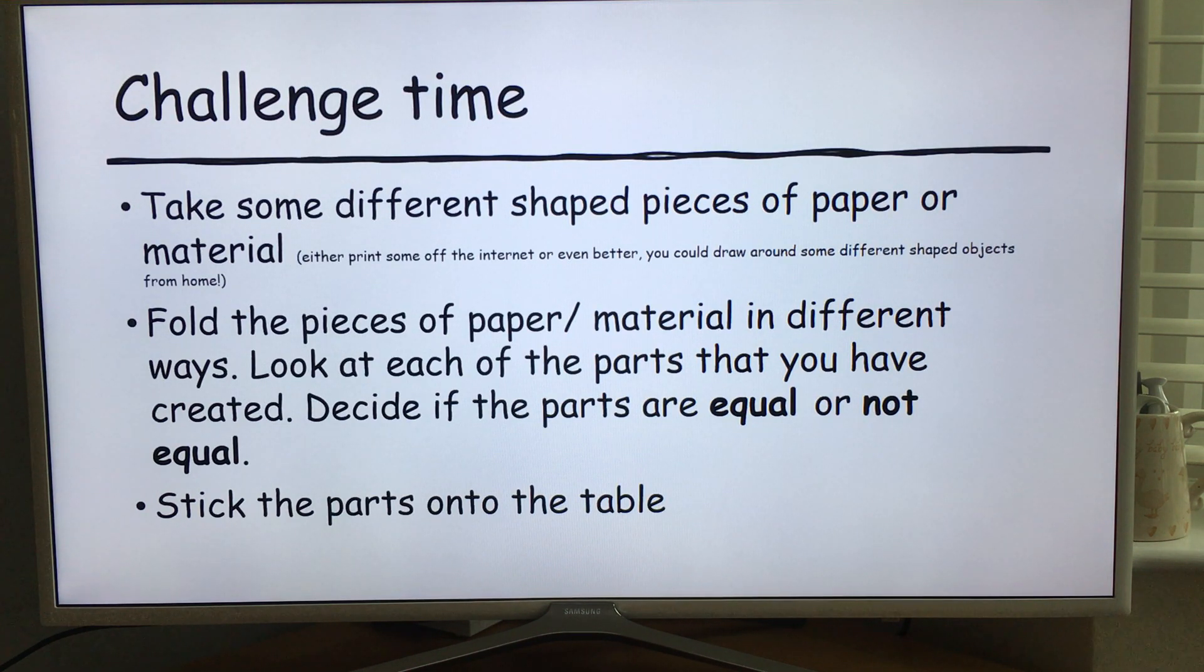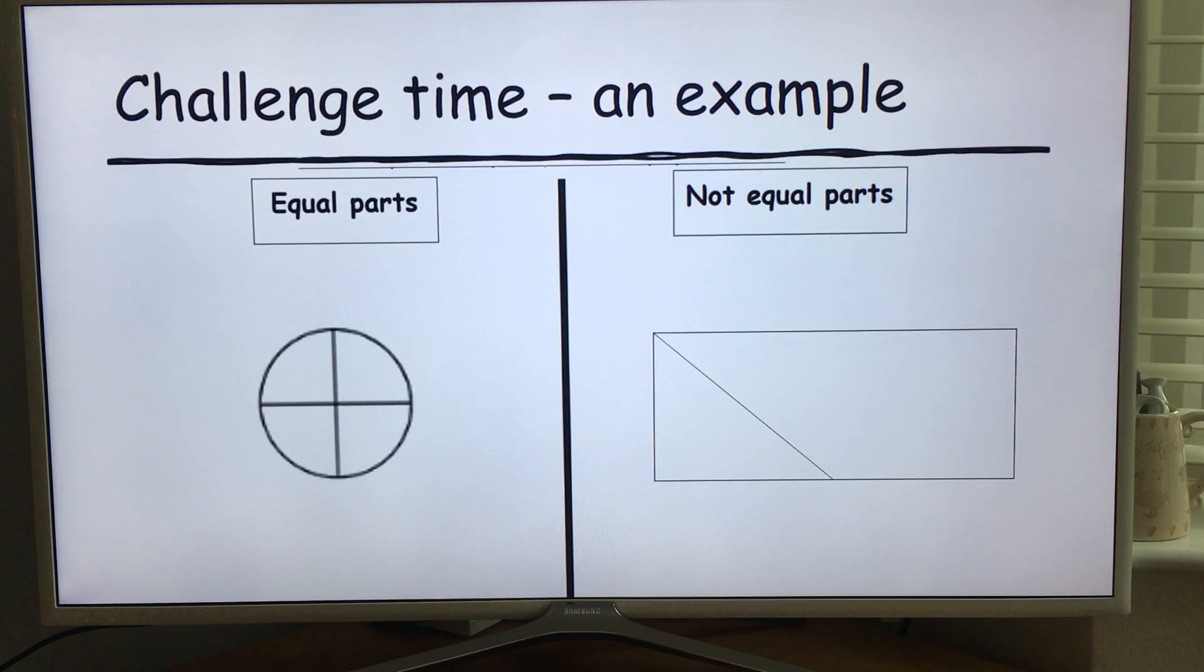And then you'll find a table that looks like this on the website. So if you fold the circle, you can see I folded it and there are four parts and all those parts are equal, they are the same size. So I would put that on the table underneath the equal parts.